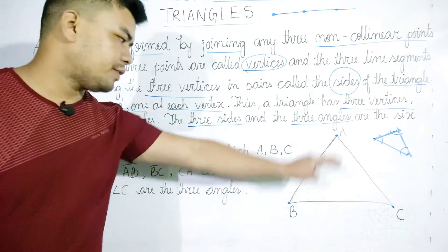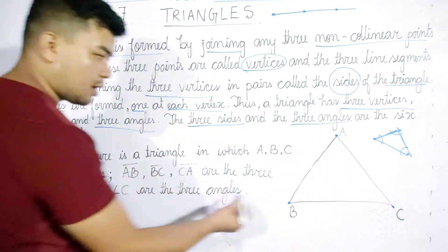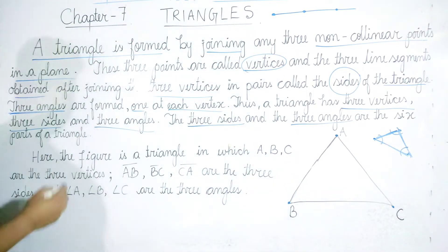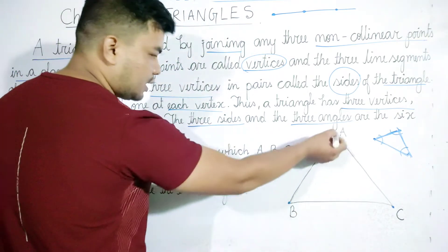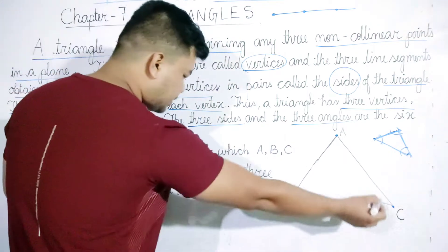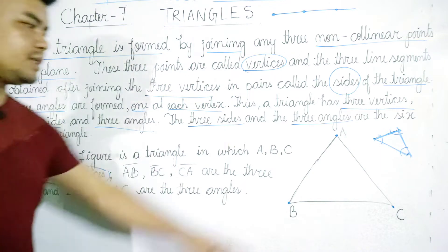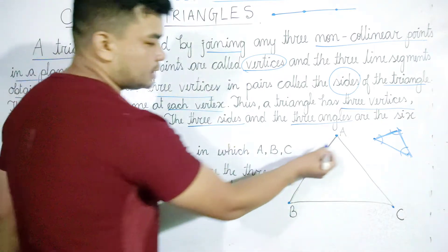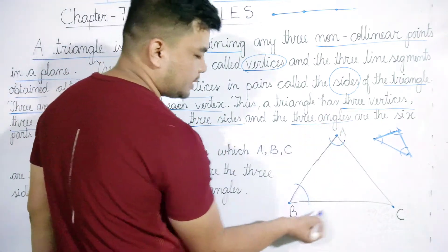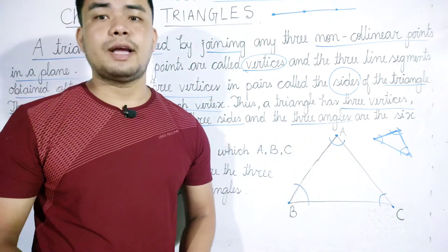Here are the figures. Points A, B, C form a triangle, with line segments AB, BC, and CA as its sides.